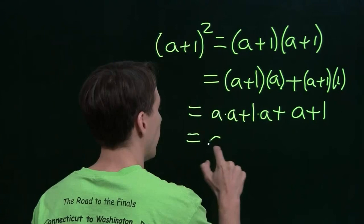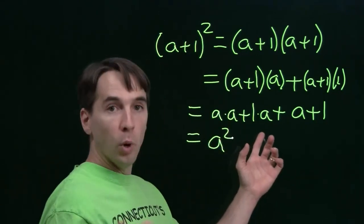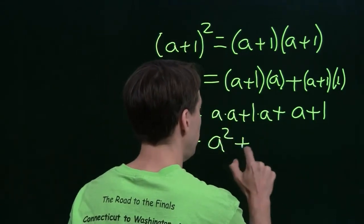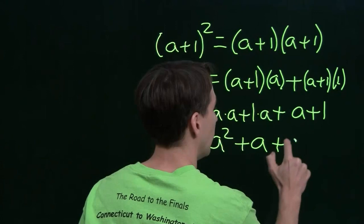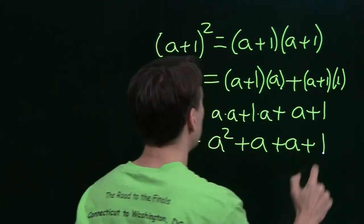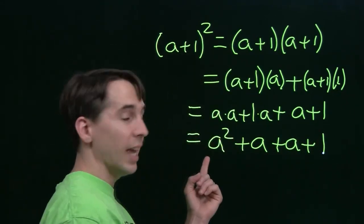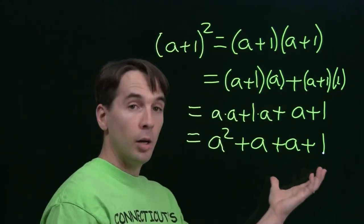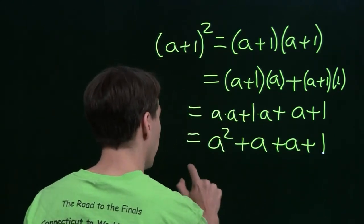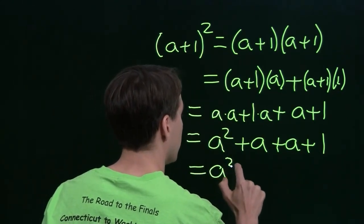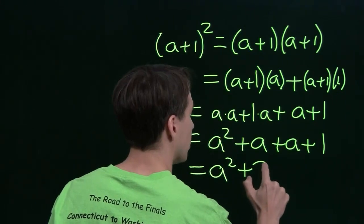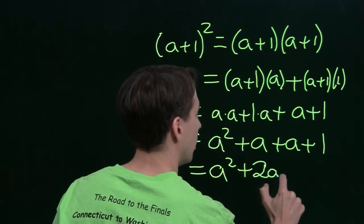So a times a, well, of course, that's a squared. 1 times a is a, and there we are. A plus 1, you take the square of a plus 1, you get a squared plus a, plus a plus 1. And we can also, of course, write that as a squared plus 2a, we just combine these two a's, plus 1.